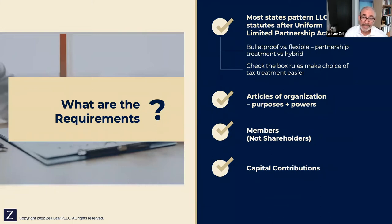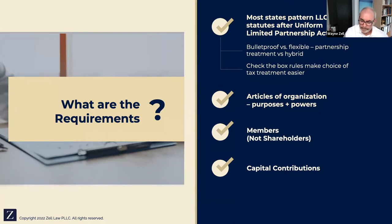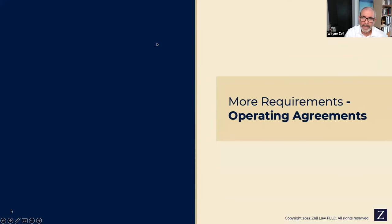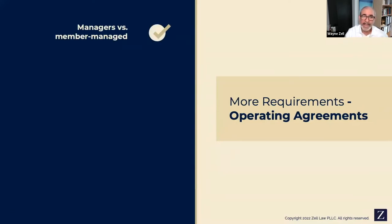Those are the basics of the requirements. You don't have to have bylaws. You don't have to have stock or unit certificates. You simply have to file Articles of Organization and keep books and records for the LLC — QuickBooks or similar accounting software works fine. Do you need an operating agreement? Generally, you should have one. It's not required by law, but without one the statutes control what happens — and in some states, if you die owning your LLC, the LLC is automatically terminated.